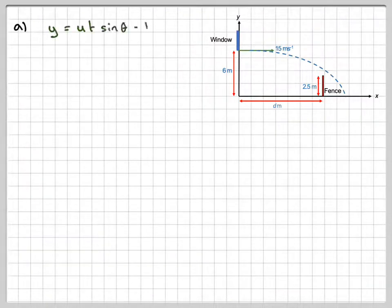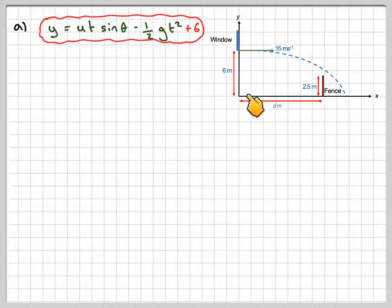So we've got a diagram here. We're going to use that y is equal to ut sine theta minus 1.5 g t squared plus 6 because it's 6 off the ground.